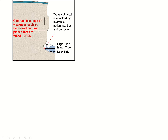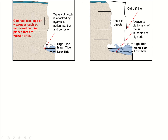Where the waves continue to beat against the base of the cliff, the cliff face will be attacked along lines of weakness by weathering processes like freeze-thaw and salt crystallization. Over time, that wave cut notch will get bigger and bigger, and the cliff face will collapse. That material will be reworked by the sea, moved about, washed away, and ground down into smaller pieces. This leaves the cliff retreating inland and creates a wave cut platform — a flat area of rock that is inundated at high tide.